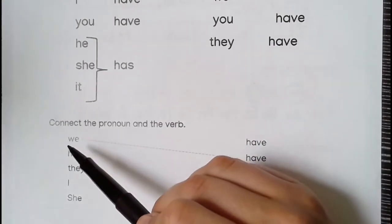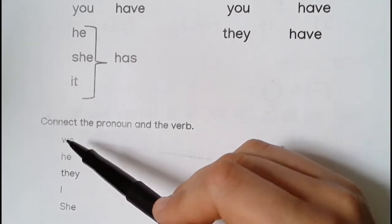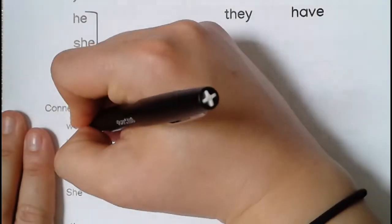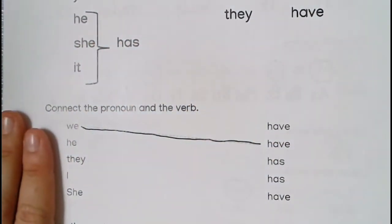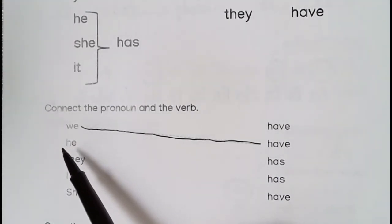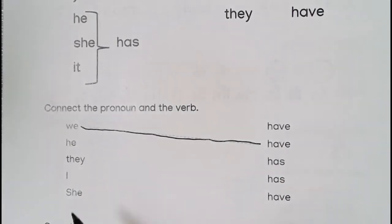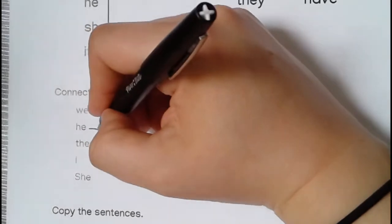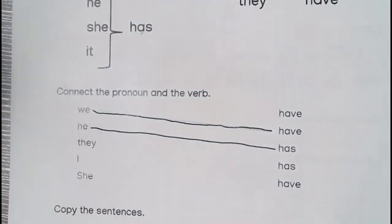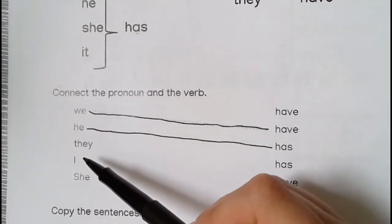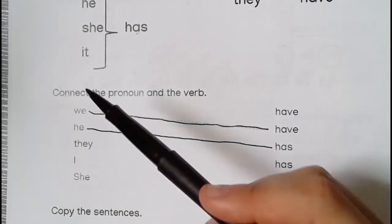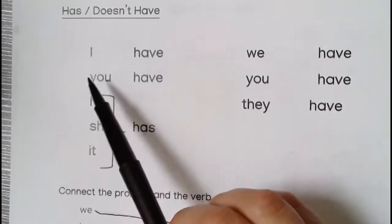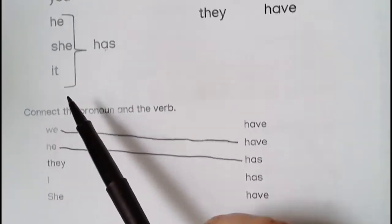So here we see 'we' — and go up here, we have. You just draw a line. We have. What is next? He — he have or he has? He has. So he has. Do you want to — how about you finish? You do these three yourself. They have. I have. She has.